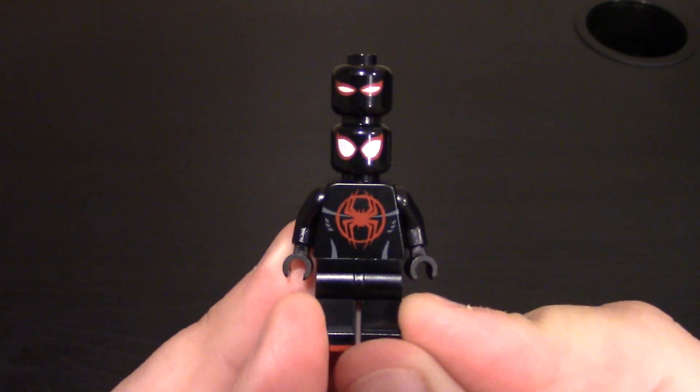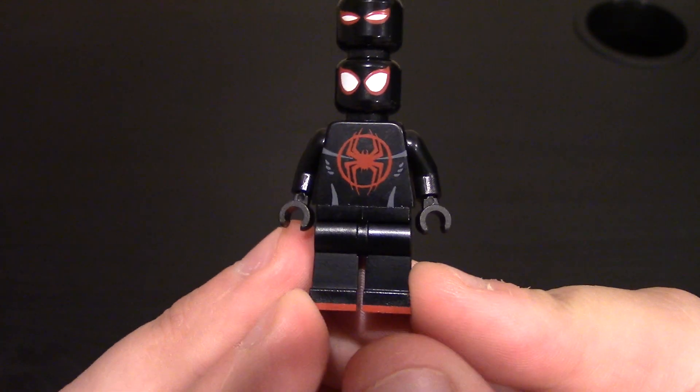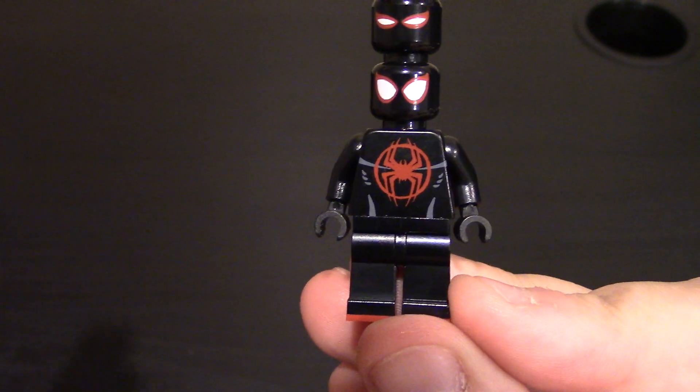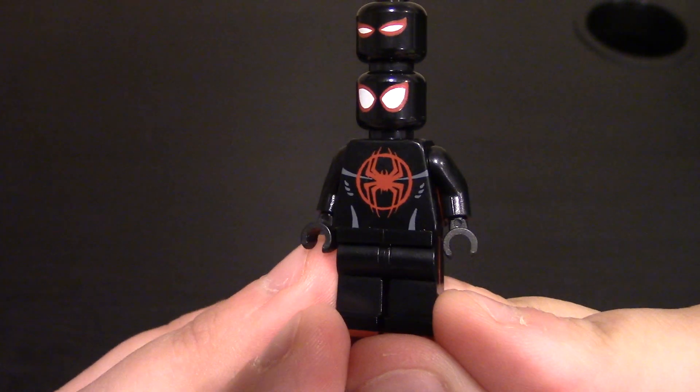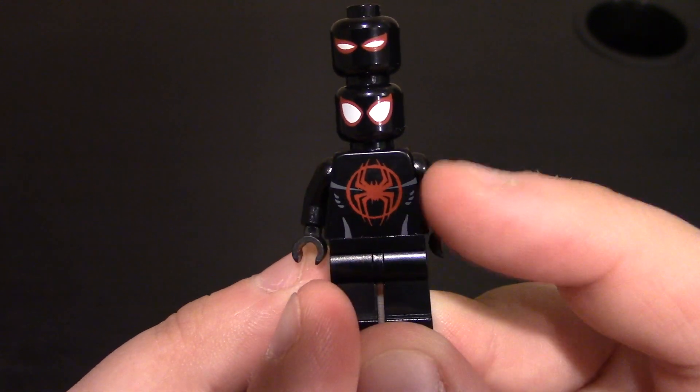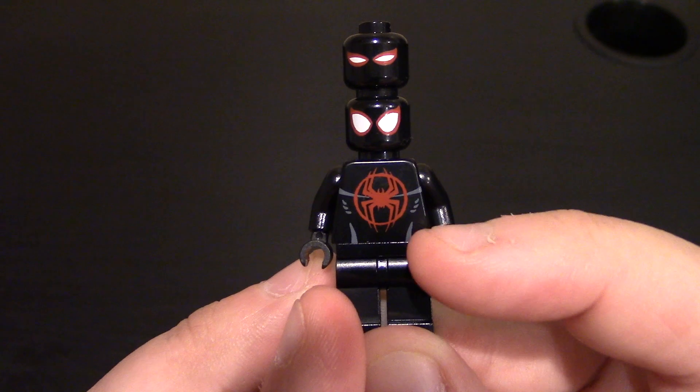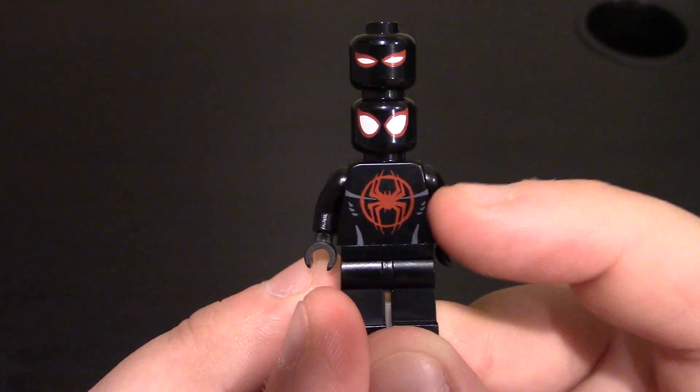So you can see the two heads that come with it. Coming down to the chest and torso, we have the big Miles Morales logo on the chest. The spider looks really good. The points are very clear. You can see the circle around it and then the muscle-like contour underneath, so his chest, his ribs. Coming down to the waist area in that lighter gray color.